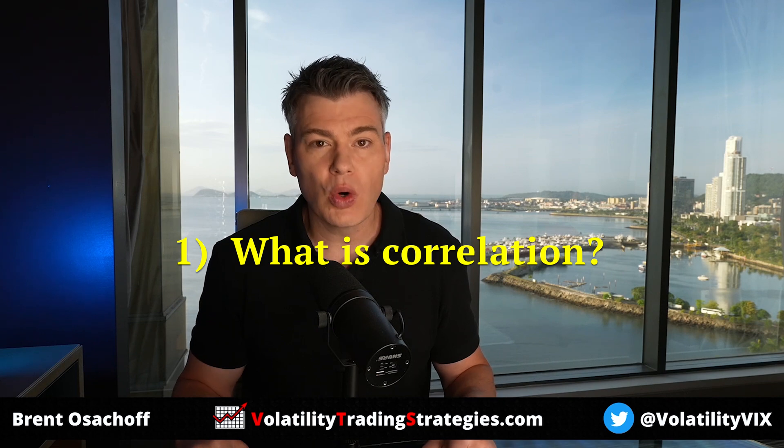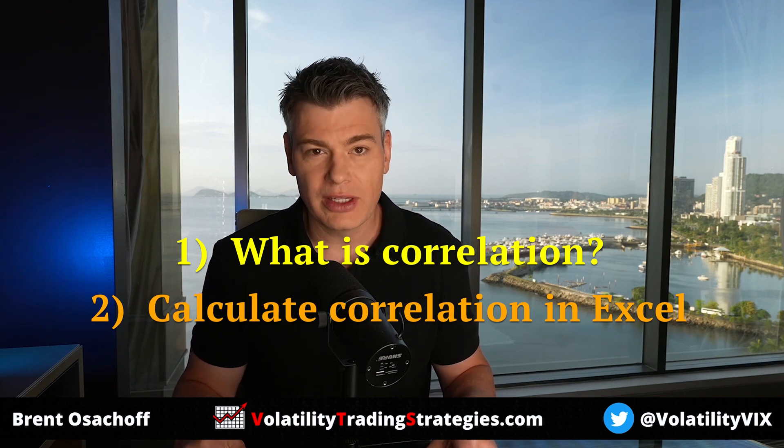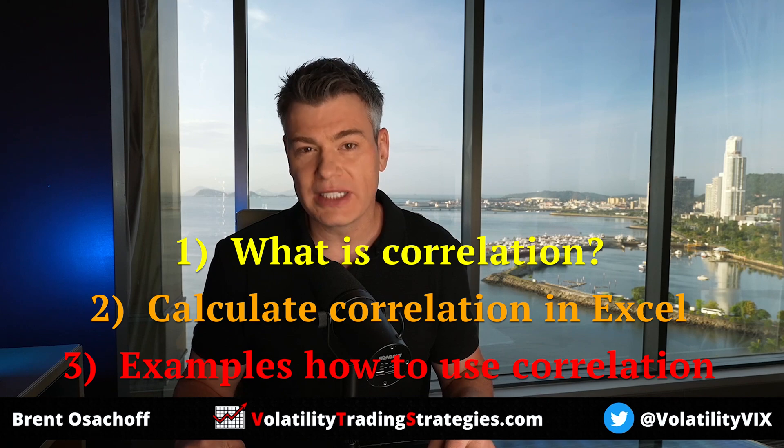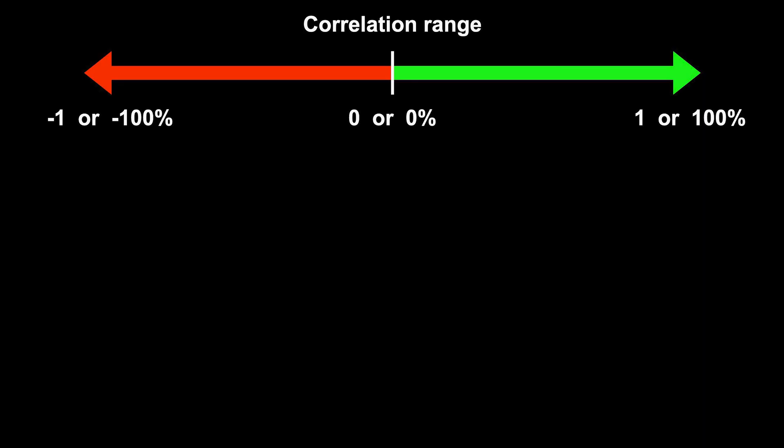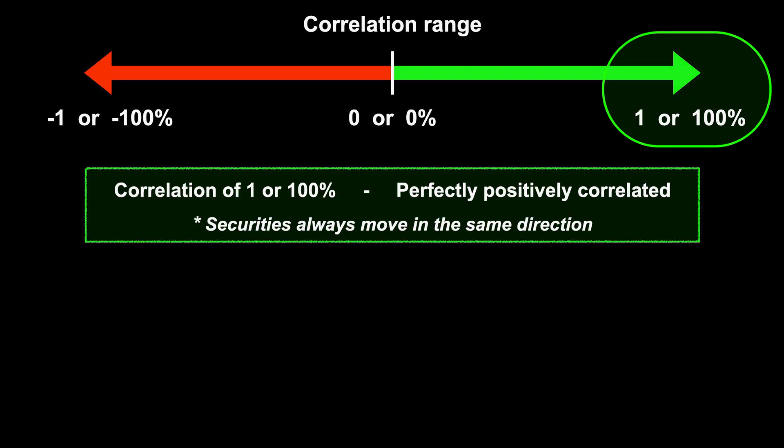So first we'll cover what correlation actually is, then I'll show you how to calculate it, and finally I'll give you a few examples of how to actually use it. Correlation is represented on a spectrum that ranges from plus one to minus one, and you may often also hear it represented as a percentage, ranging from 100% to minus 100%. A correlation of one, or 100%, means that the two securities or assets being measured are perfectly positively correlated. That means they always move in the same direction — when one goes up, the other always goes up.